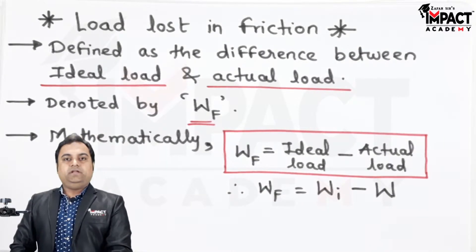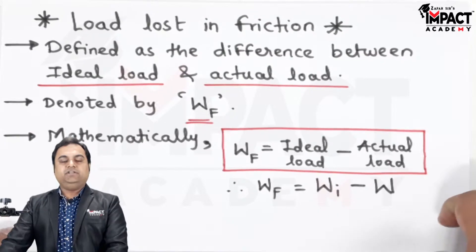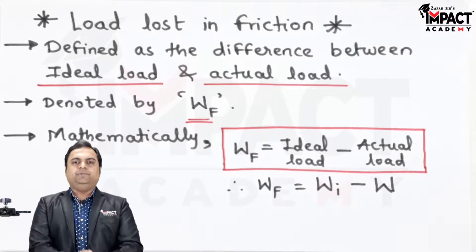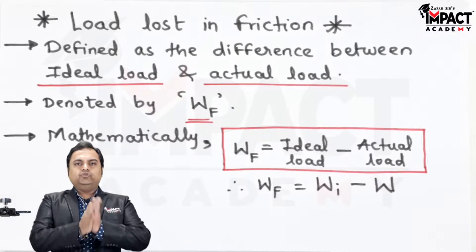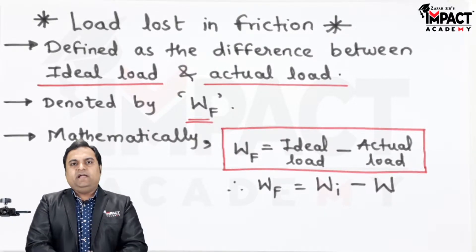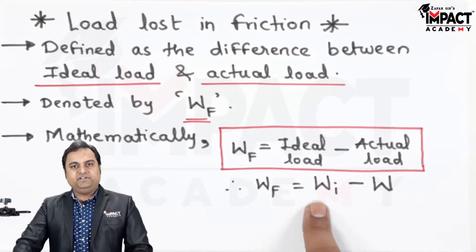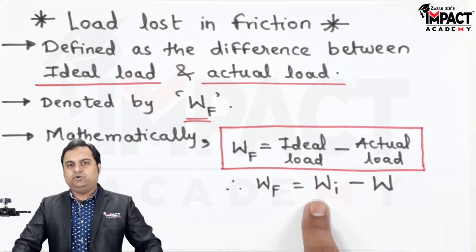Now, when there is an ideal machine, in that case the friction is absent. So compared to an actual machine, we can lift a huge amount of load in case of an ideal machine. So W_I value would be greater than W because it is present in an ideal machine in which the friction is not there.